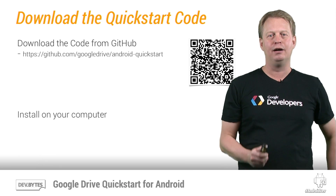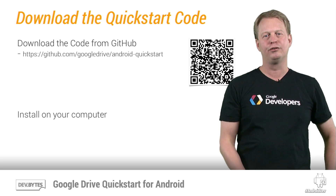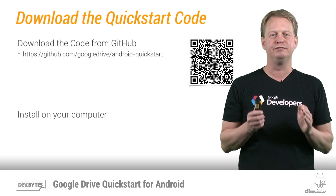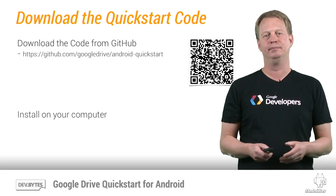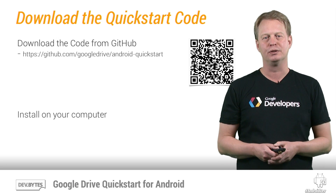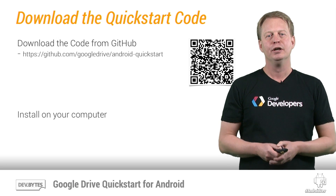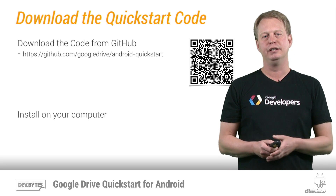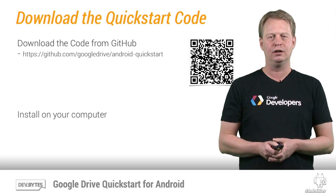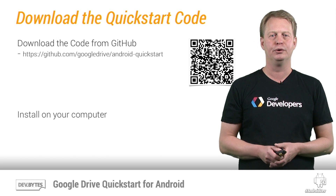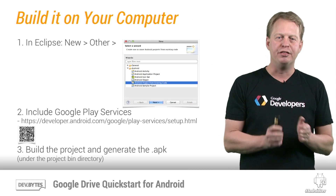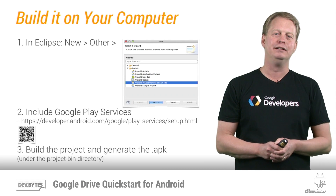The first step is to download the Quick Start code, which is available on GitHub under the Google Drive folder. Once you have downloaded this, you should install it on your computer. Then it's time to build the app.